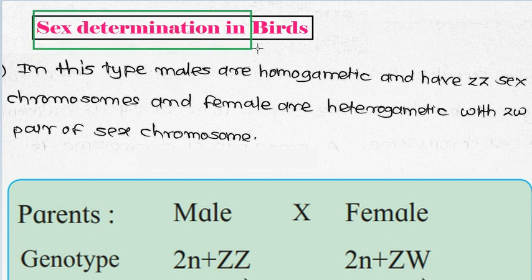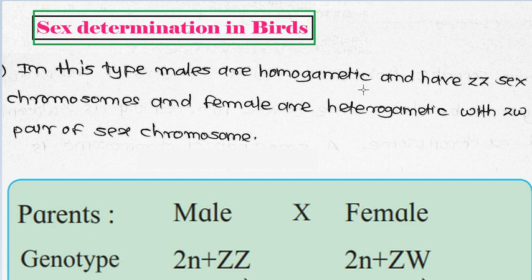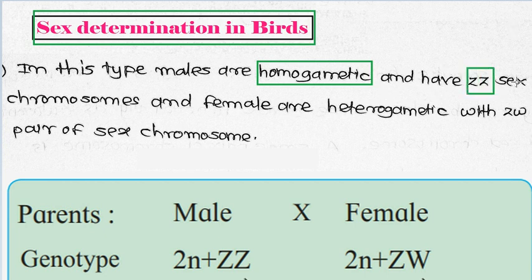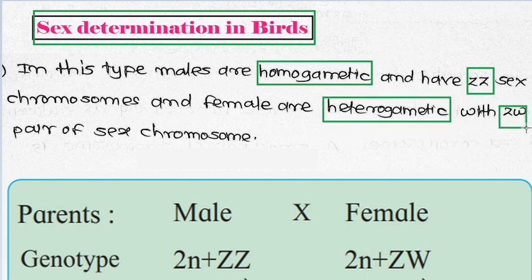Sex determination in birds: in birds, the sex determination type is different. Males are homogenetic - unlike human beings where males are heteromorphic. In birds, males have ZZ chromosomes and females have heteromorphic ZW chromosomes.